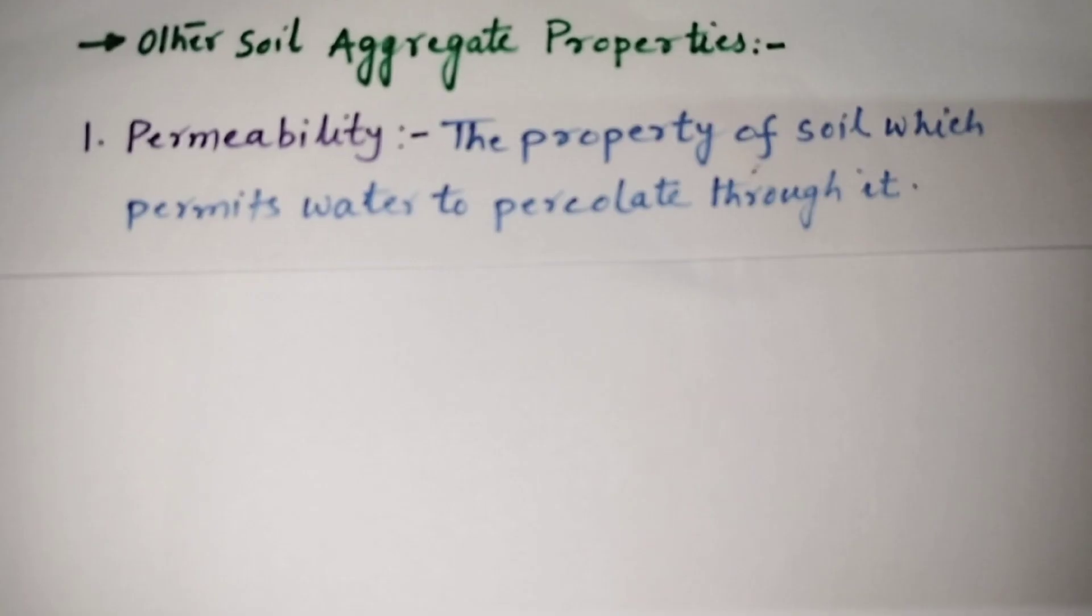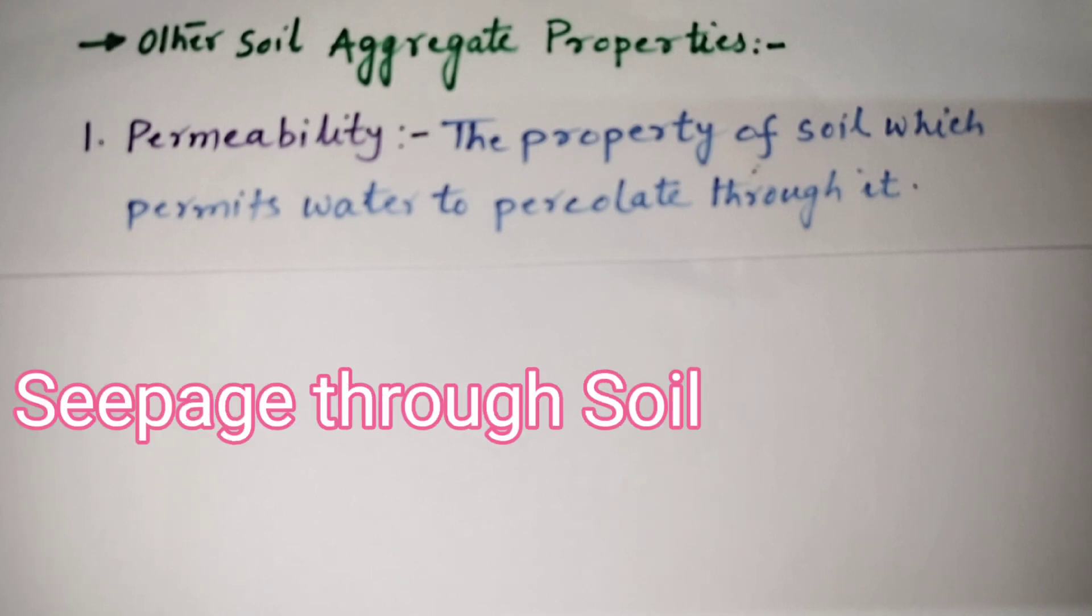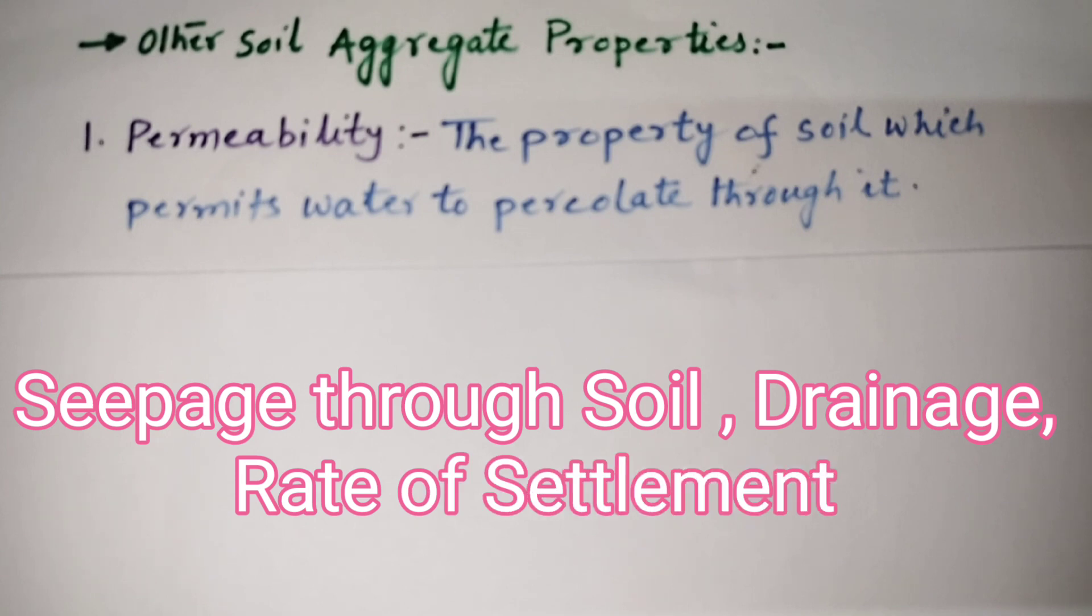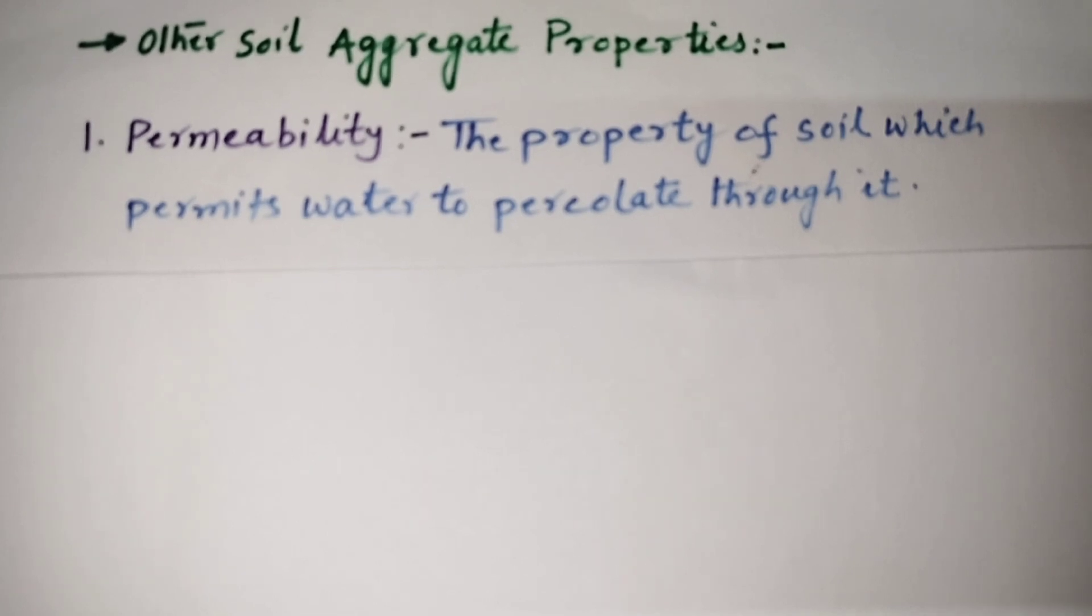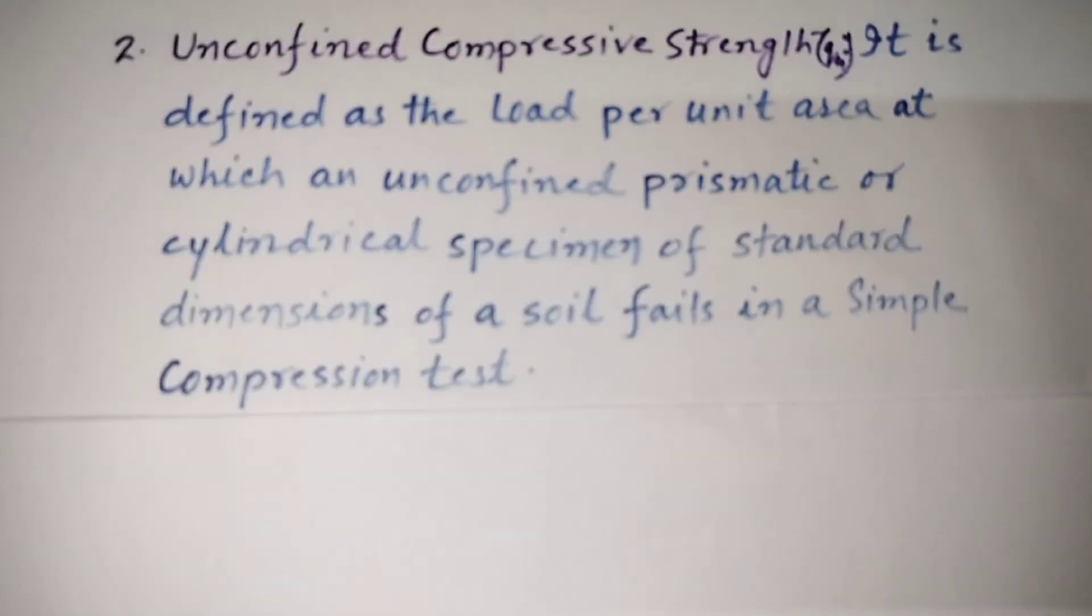Properties related to permeability. This permeability of a soil is an important soil aggregate property and is useful in several engineering problems. For example, seepage through soil, drainage, rate of settlement of compressible layer, etc. The coefficient of permeability of soil can be determined from various laboratory and field tests. We will learn in separate chapter.